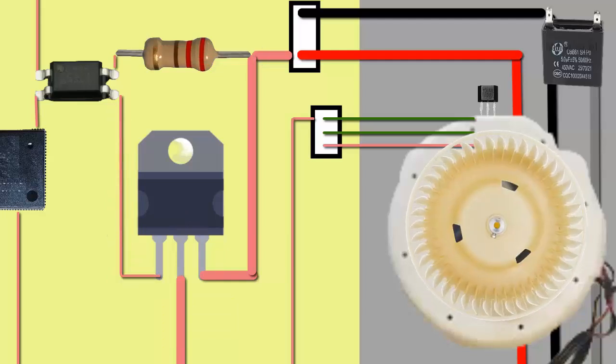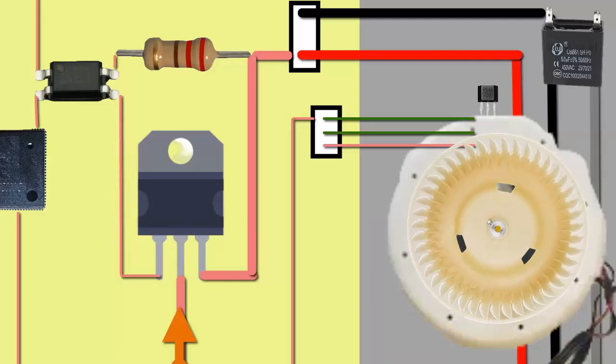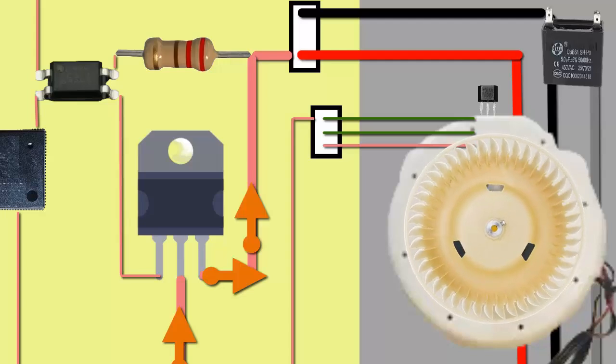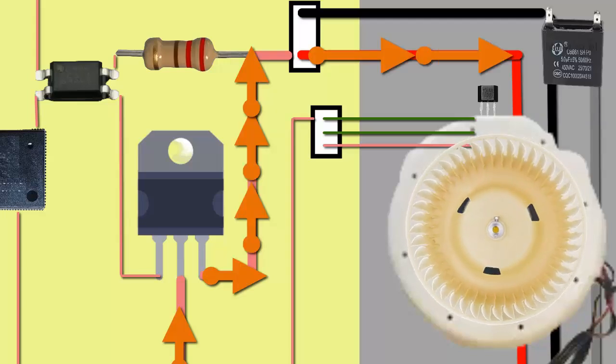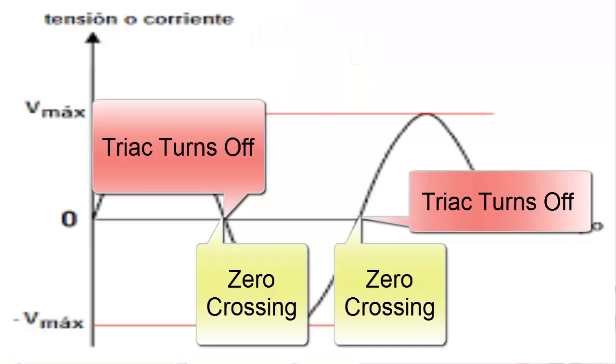The current from the external electrical grid reaches the triac through a trace and connects to the fan through a connector. When the voltage curve approaches zero volts again, the triac disconnects automatically, interrupting the motor's power supply.